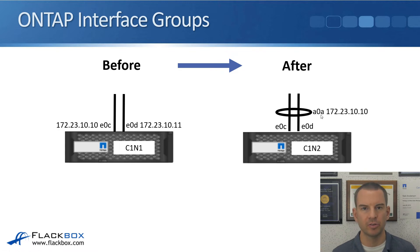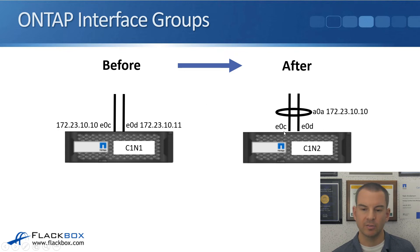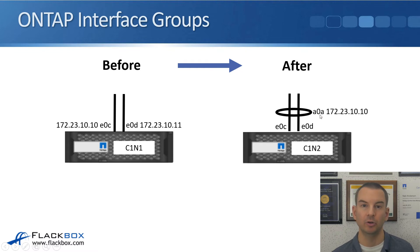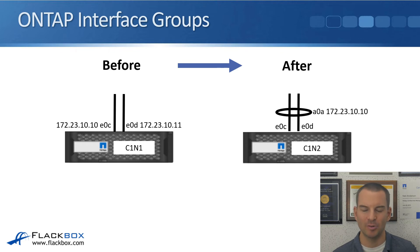The naming convention for the interface group is A0A. Ethernet physical ports begin with E, followed by the slot number, then a letter for the individual port — so E0C and E0D. When bundled, they form the logical interface group named A0A. The first interface group on a node is A0A, the next A0B, then A0C, and so on. The A stands for aggregate. Now we can have a single IP address available on both physical ports, with redundancy and optionally load balancing.